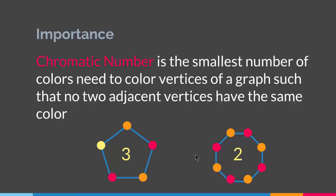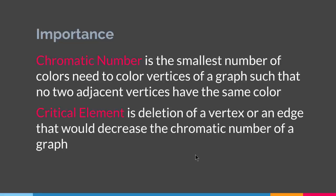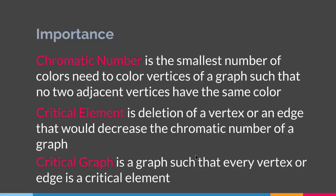So let's see how this is related to critical graphs. Before we talk about critical graphs, we have to talk about critical elements. A critical element is the deletion of a vertex or an edge that would decrease the chromatic number of a graph. So if we color every vertex such that no two adjacent vertices have the same color, and removing an edge or vertex causes the chromatic number to decrease, that vertex or edge is called a critical element. A critical graph is a graph in which every vertex or edge is a critical element — meaning removing any vertex or edge decreases the chromatic number.